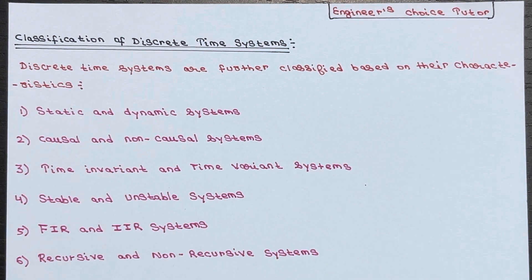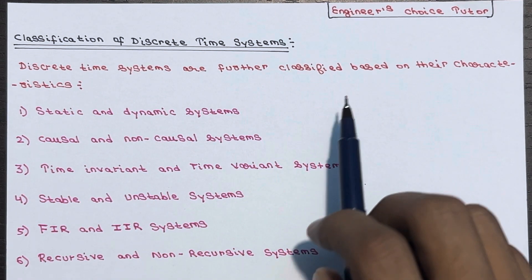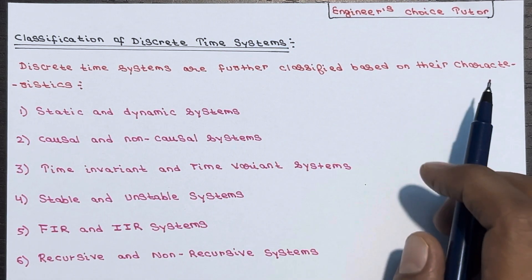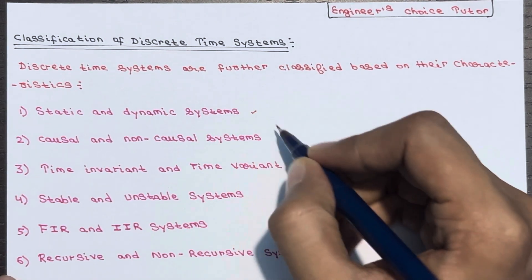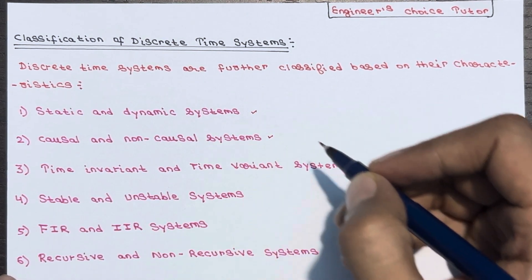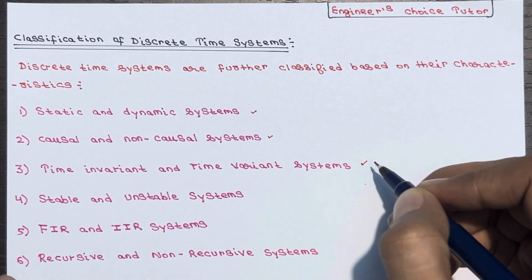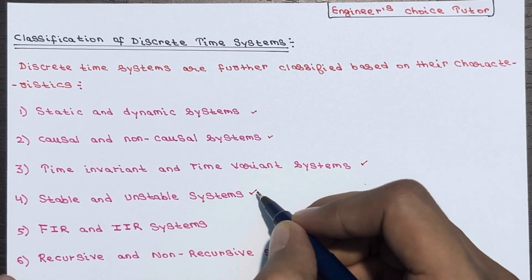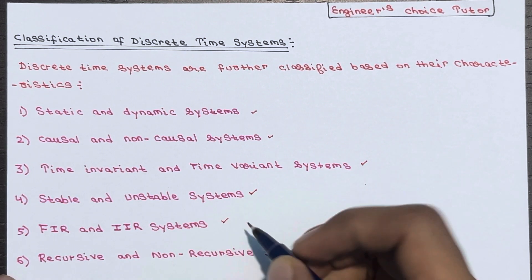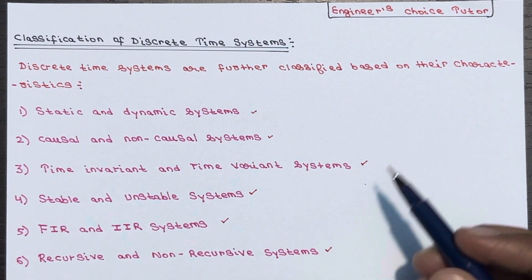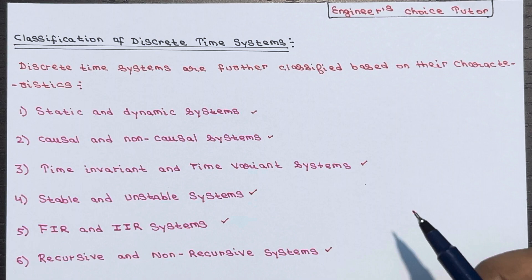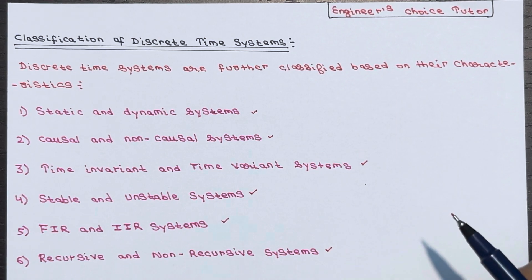From today onwards we will see classification of discrete time systems. Discrete time systems are further classified based on their characteristics. We have static and dynamic systems, causal and non-causal systems, time-invariant and time-variant systems, stable and unstable systems, FIR and IIR systems, and recursive and non-recursive systems. We are going to deal with all types of systems one by one in detail.